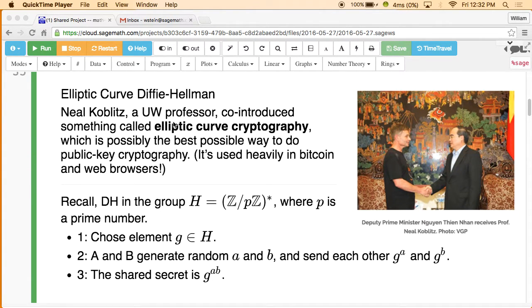I'm going to tell you about elliptic curve cryptography, which has generally seemed to be at present the best overall approach in many ways to public key cryptography.